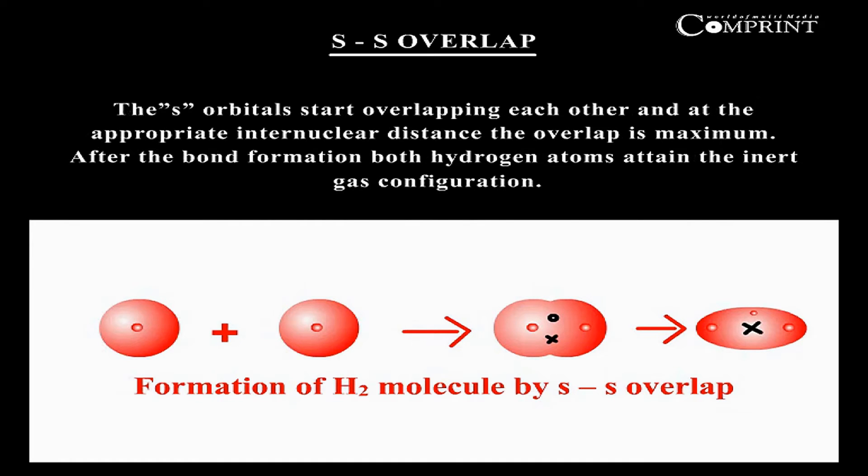the s orbitals start overlapping each other, and at the appropriate internuclear distance, the overlap is maximum. After the bond formation, both hydrogen atoms attain the inert gas configuration.